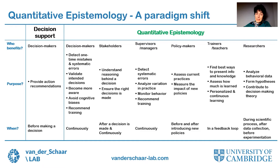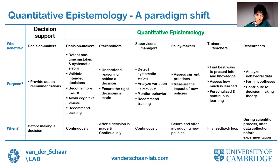At first sight, this may look like yet another decision support system, but this is not the case. Quantitative epistemology is a paradigm shift in human-machine interaction. Decision support provides action recommendations to decision makers before they make a particular decision. Instead, quantitative epistemology provides decision makers continuously with information about mistakes they may make and systematic errors. It enables them to validate their intent in decisions, makes them more aware of the way in which they learn and react to a variety of information sources, enables them to avoid cognitive biases, and can even recommend training — for instance, if the decision makers are clinicians.